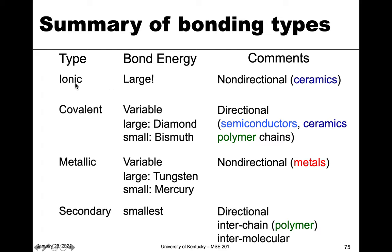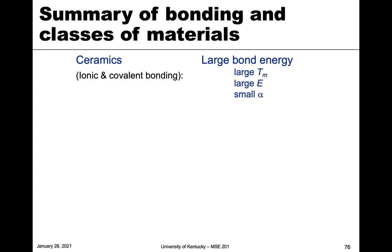Regarding directionality: ionic bonds are non-directional — these are ceramics. Covalent bonds are directional and tend to appear in semiconductors and some ceramics. In polymers, within the chain we have covalent bonds. Metallic bonds are also non-directional, like ionic. Secondary bonds are directional, as we saw with dipoles — they are important for polymers between the chains, what we call interchain bonding.